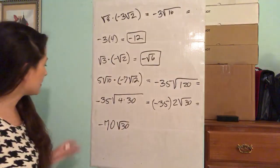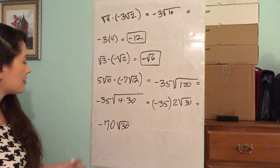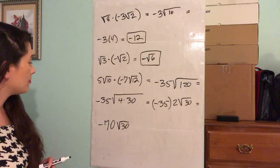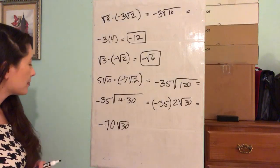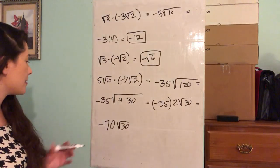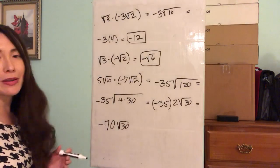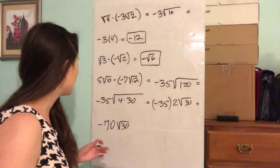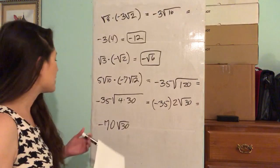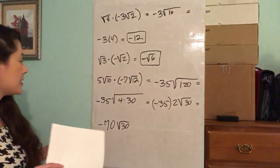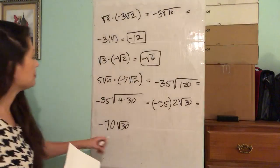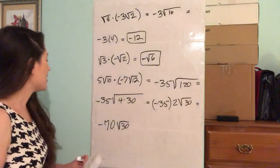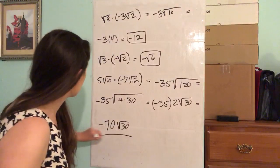I don't think you can simplify it any more than that. 30 is not a prime number, but you really can't break it down any further. And that is our final answer.